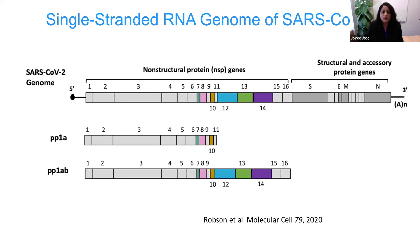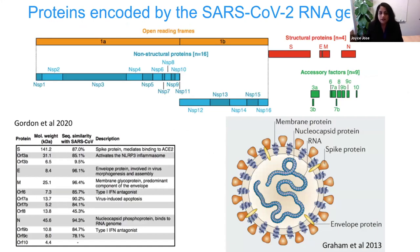Two-thirds of the genome codes for the non-structural proteins, which are involved in replication, host interactions, and immune modulation. The structural proteins are present in the last one-third of the genome. As soon as the virus enters, it makes the non-structural proteins — called NSPs — as two polyproteins via a frameshift: PP1A and polyprotein 1AB. These are processed into 16 different proteins cleaved by viral proteases from a single polypeptide.